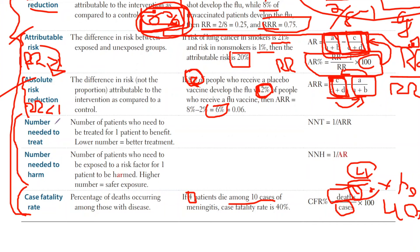Let's close with number needed to treat and number needed to harm. You can memorize these with a simple mnemonic: 'harm' goes with AR (attributable risk), and number needed to treat goes with ARR (absolute risk reduction). You always put 1 over the respective value. Number needed to treat uses the double-R (ARR) and number needed to harm uses AR. But let's take an extra step and understand why this formula works.